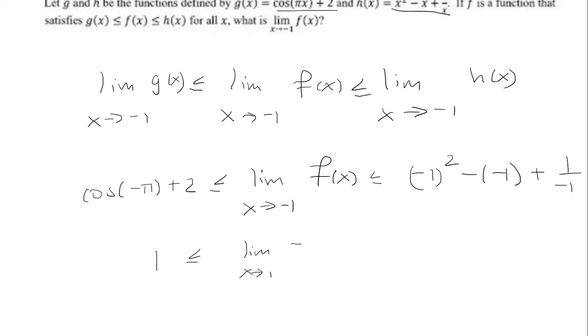I still have my limit as x approaches negative 1 of f of x. And now on the right side, I have to simplify. I have two negatives, I'll make it a positive. Negative 1 squared plus 1 is 2. And then 1 over negative 1 is negative 1, so 2 minus 1 is 1.